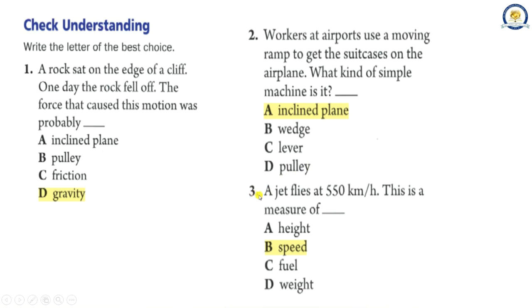3. A jet flies at 550 kilometers per hour. This is a measure of A. Height B. Speed C. Fuel D. Weight. The correct answer is B, Speed.